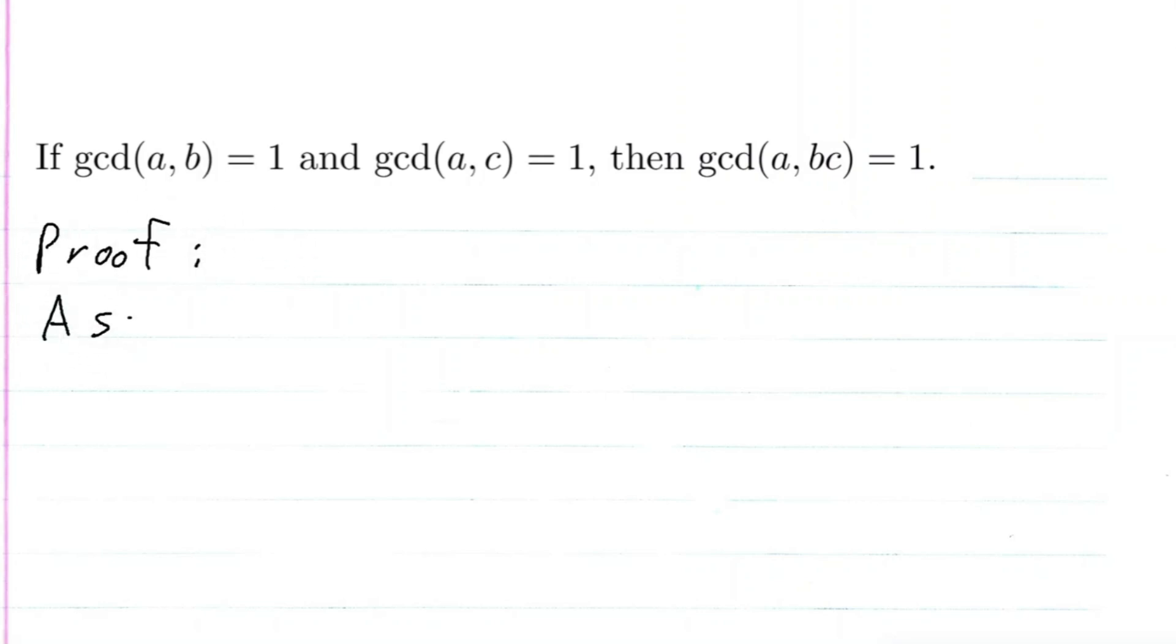We're going to assume the GCD of A and B is equal to one, and the GCD of A and C is equal to one.